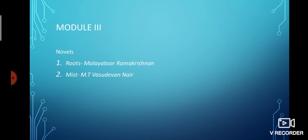Now moving to the modules I am dealing with. In the third module, you have two novels: Roots by Malayattu Ramakrishnan, and Mist by M.T. Vasudevan Nair. Roots is a Malayalam semi-autobiographical novel written in 1966. It won the Kerala Sahitya Academy Award and talks about the value of relations, also arousing childhood nostalgic memories. In Mist, M.T. Vasudevan Nair has beautifully pictured a moving tale of love and longing, and this novel will surely give an excellent reading experience.